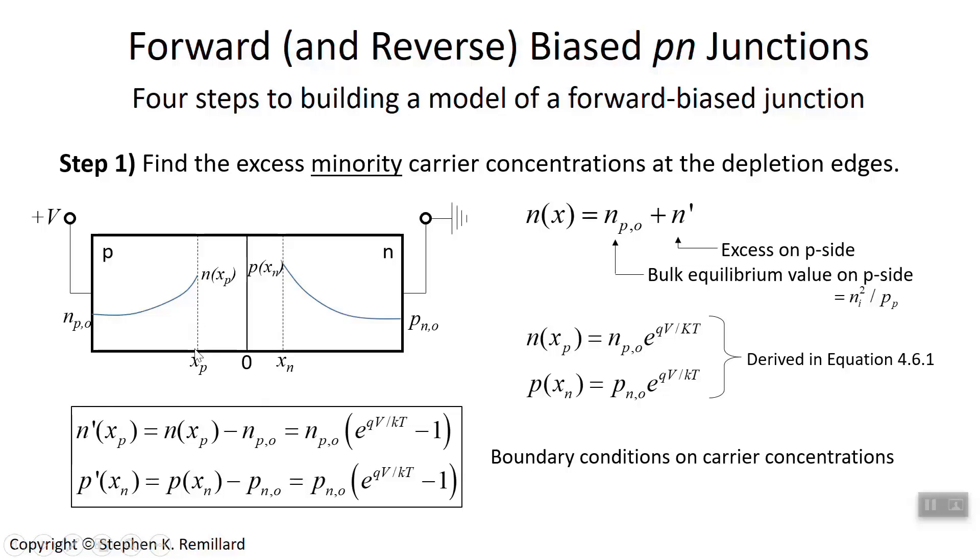So N prime at the depletion zone edge of X sub P is N at the depletion zone edge minus the equilibrium value. It's this step plate here. Let's use our expression that we get from equation 4.6.1, which you have now finished pausing the video to study and are comfortable with.